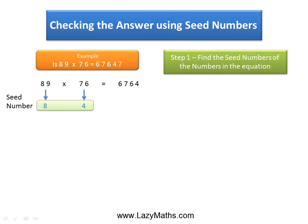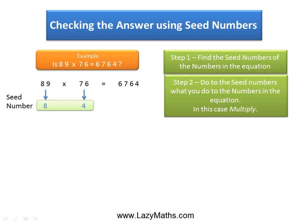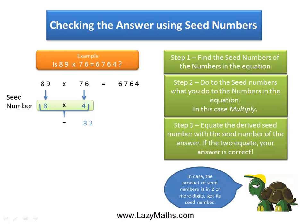Now multiply 8 and 4 and we get 32. The seed number for 32 itself is 5.